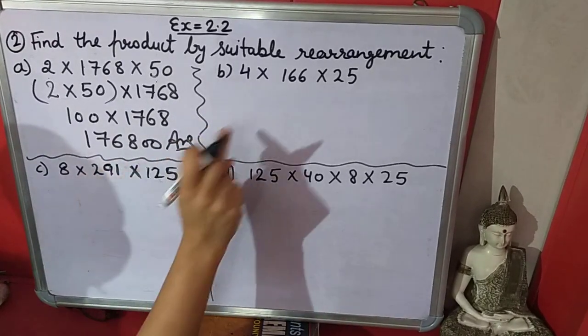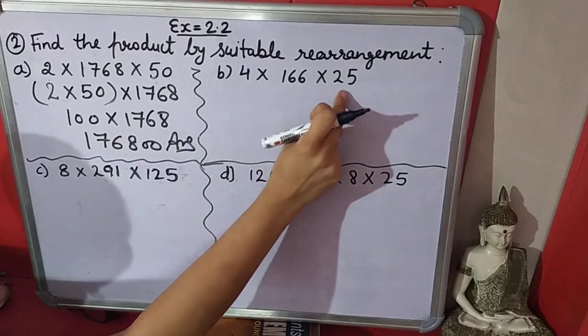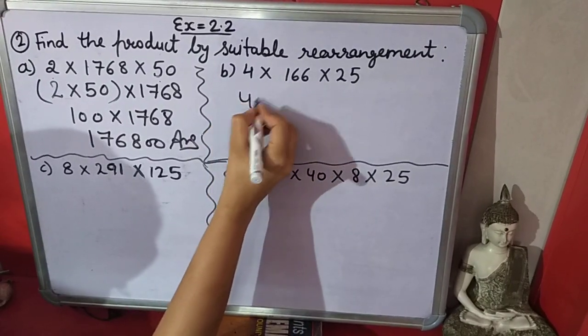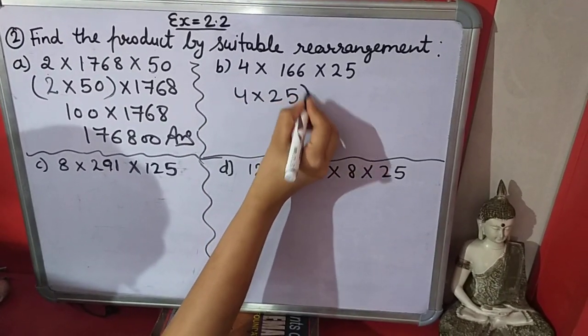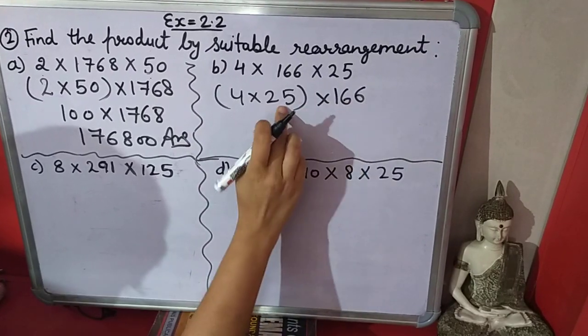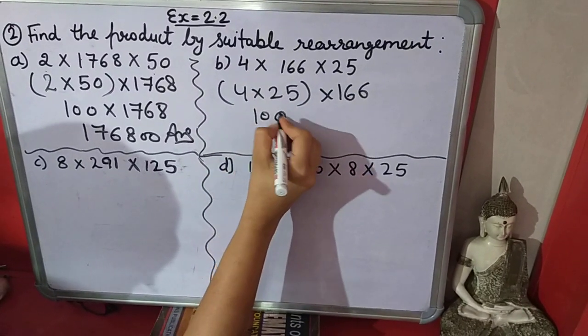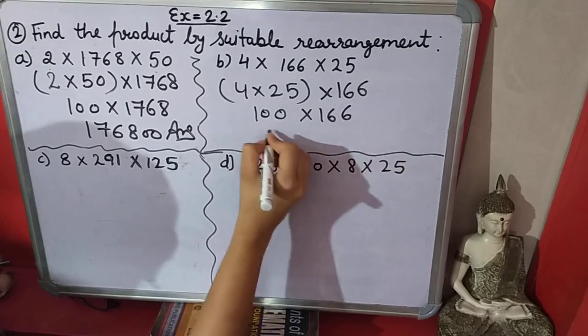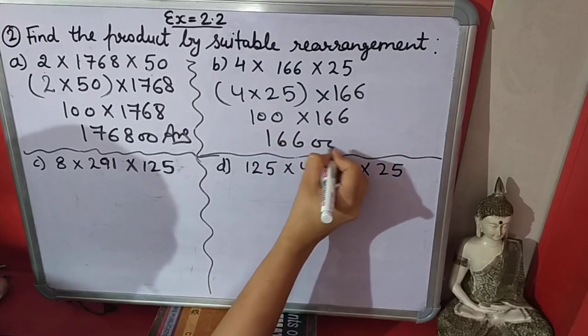In this question also, if I will change the position of 4 and 25, so it will be 25 times 4 is 100, and the answer will be 100 times 166, which is 16,600.